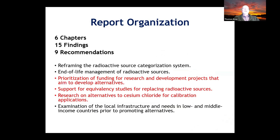Our report is grouped into six chapters, with 15 findings and nine recommendations. The overall summary covers: reframing of the radioactive source categorization system; end-of-life management of radioactive sources; prioritization of funding and R&D for alternatives; support for equivalency studies for replacing radioactive sources; research on alternatives to cesium chloride for calibration applications; and examination of local infrastructure needs in low and middle income countries, primarily in the form of external beam radiotherapy.